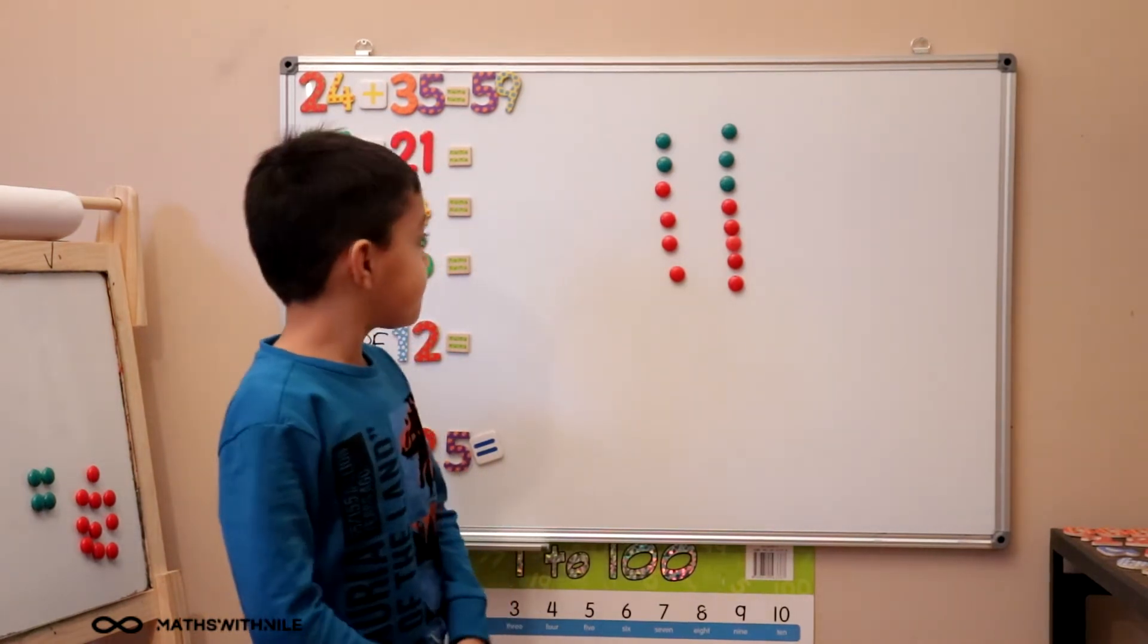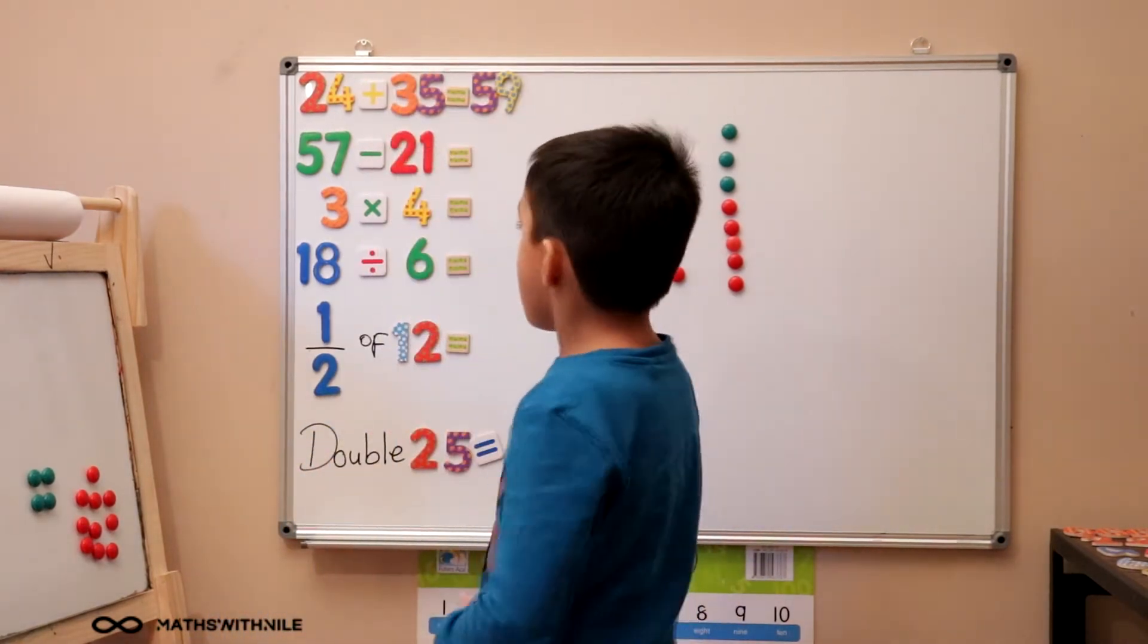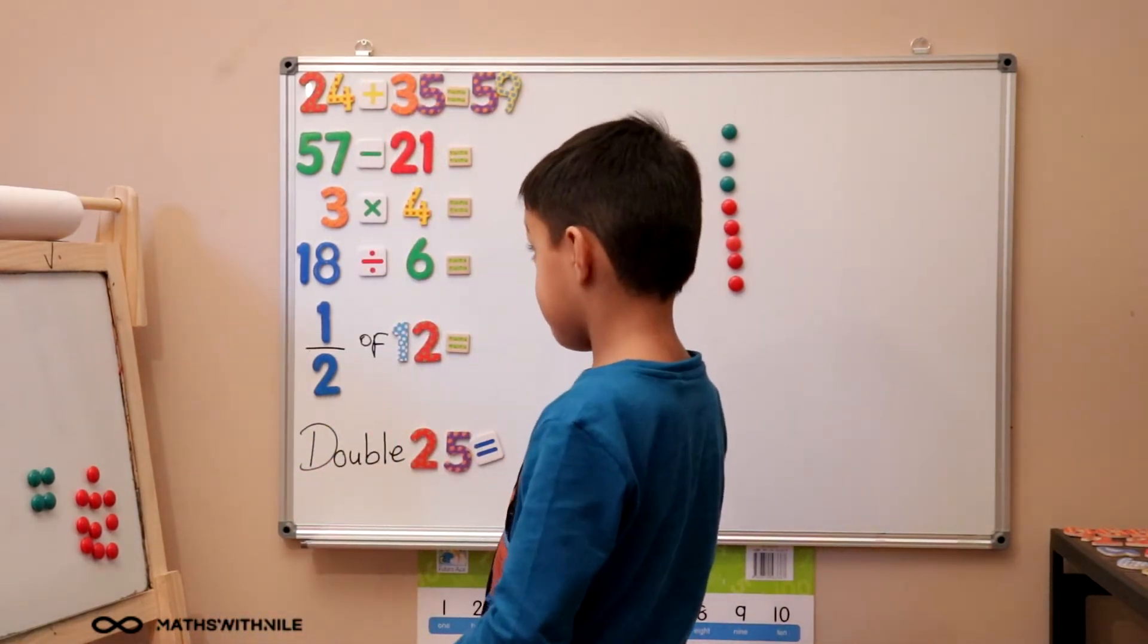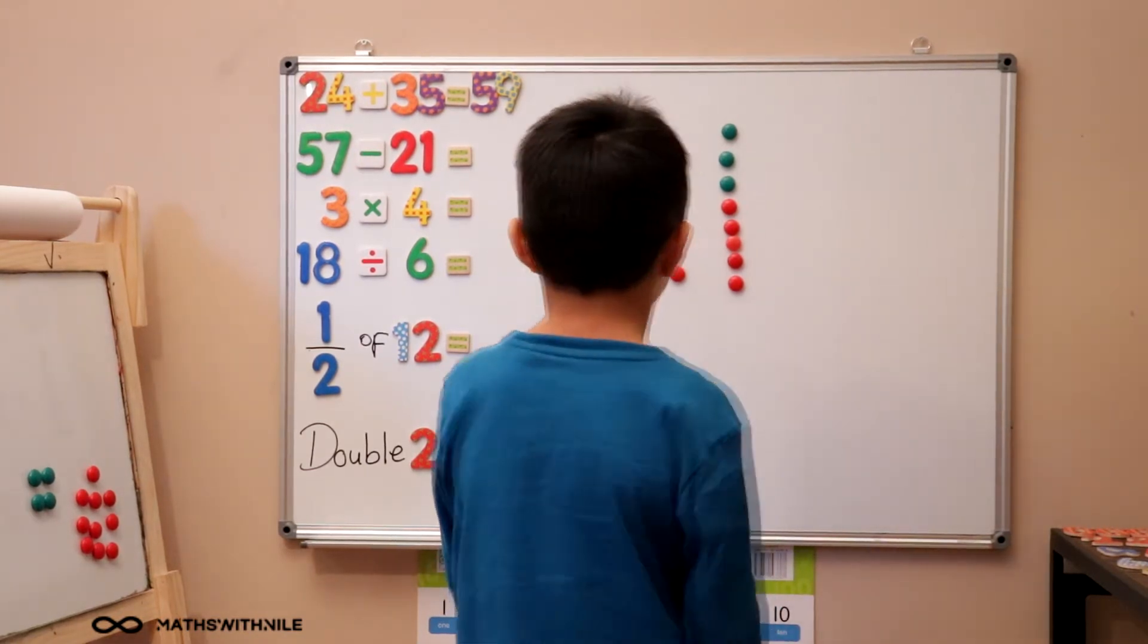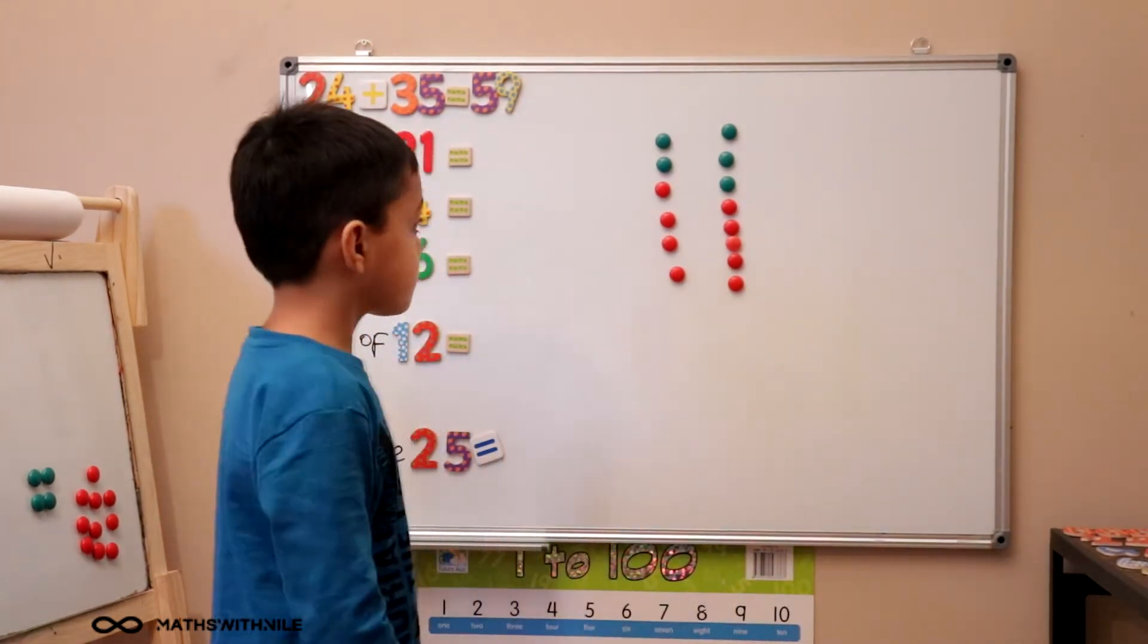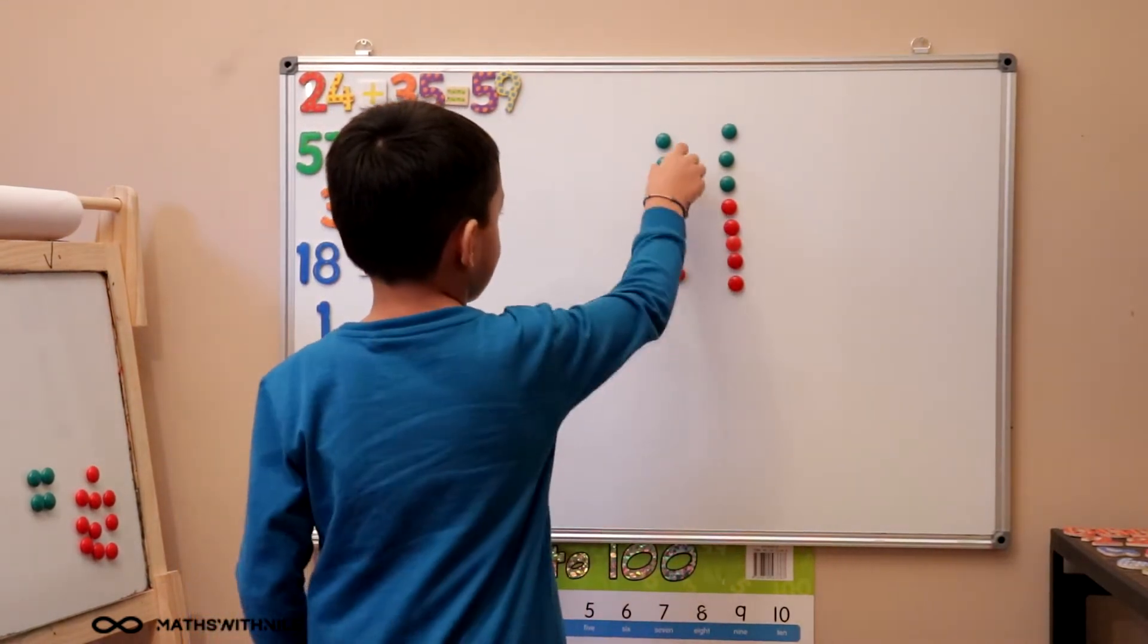So let's do the other question. Can you read the other question first? We can't see it. So you'll have to stand in the middle to read the second question. 57 take away 21. Very good. So can you use the counters that's already on the board and can you count out 57? Same thing. Green for tens.